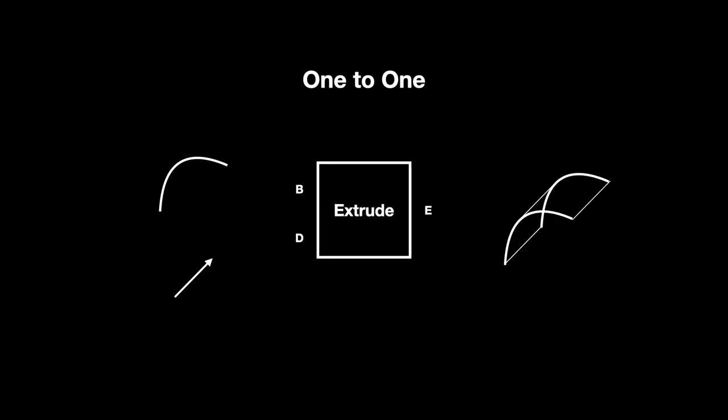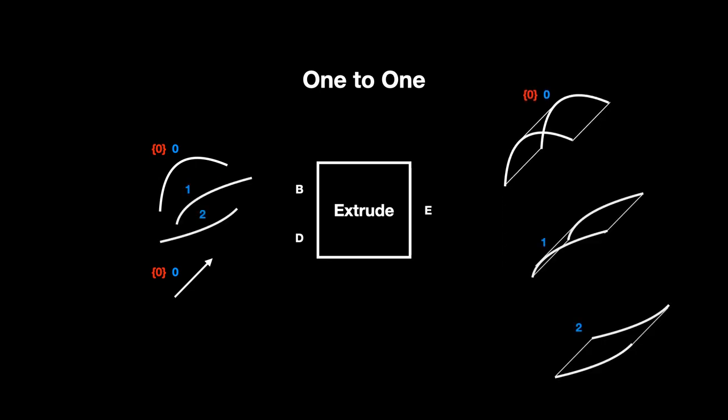A component that takes in single items and produces single items, like extrude, is a one-to-one component. These components will not alter your data trees. The structure going in is the same as the structure coming out. If you feed this component a list, a list will come out the other side. The index of each output item will match the index of the input it came from.